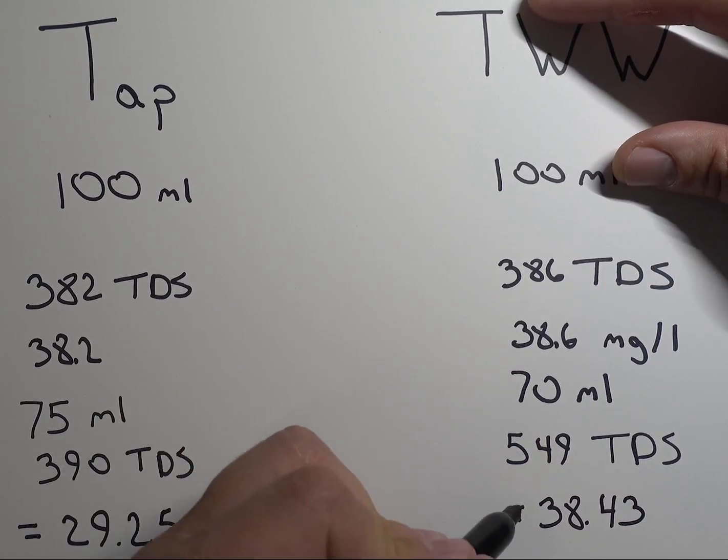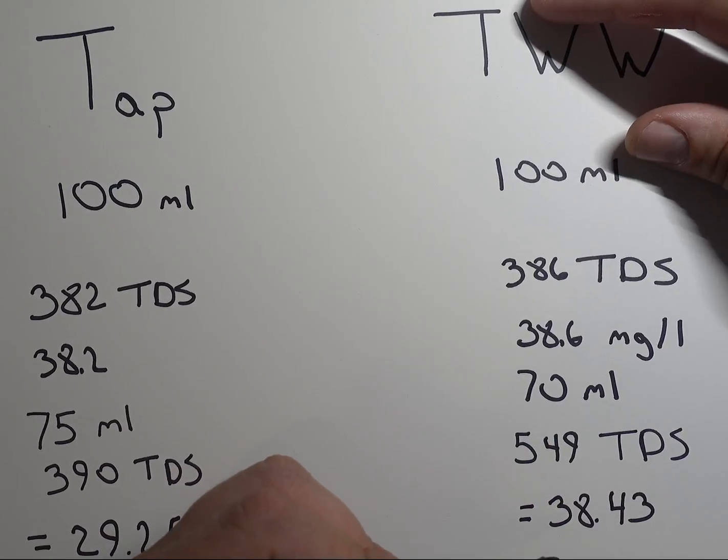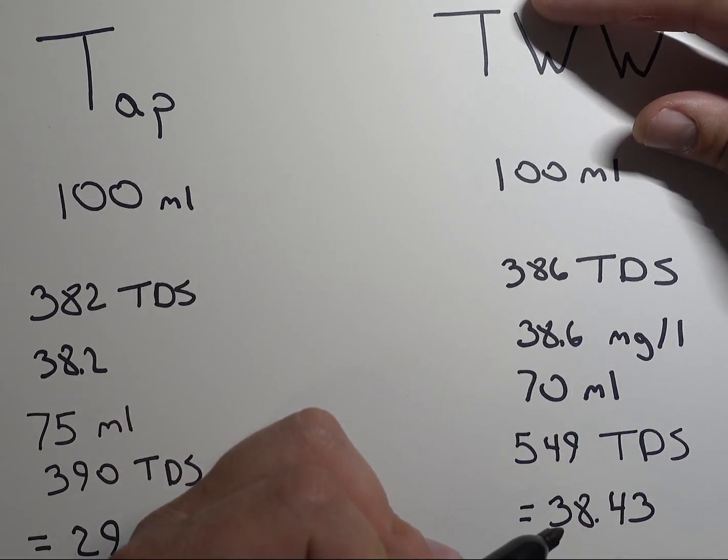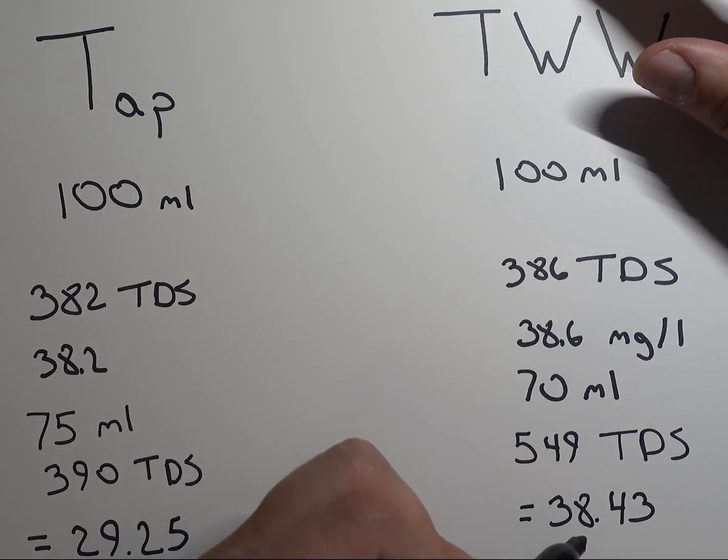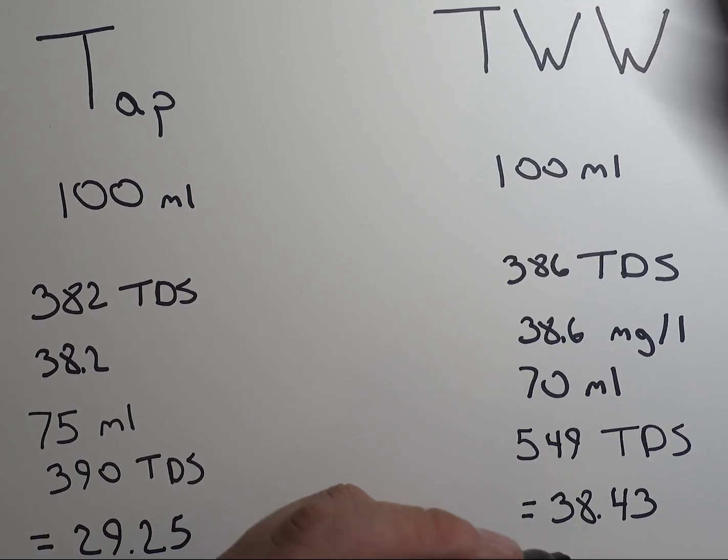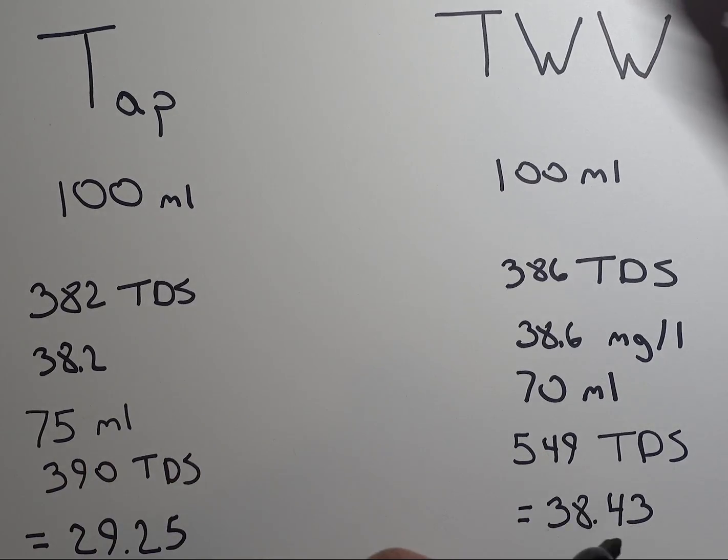And if you see, that's pretty much what we started with. So the small discrepancy is probably from the calibration of the equipment we're using. Some of the minerals might have got attached or at least stuck onto the side of the glass.